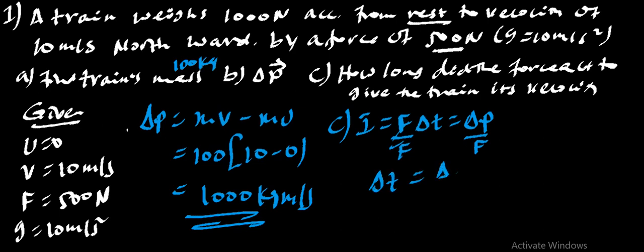change in T is change in P over F. This is 1000 kg m per second over force is 500, which is 10 over 5 is 2 seconds.